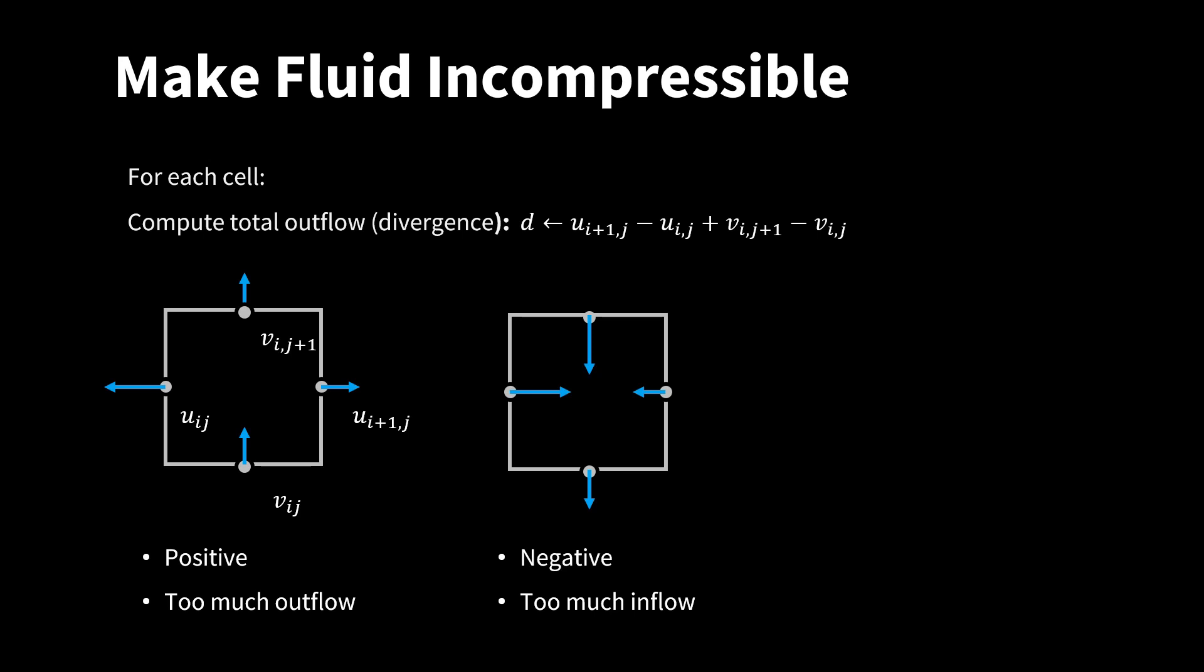In this example here, the divergence or the total outflow is negative. There is too much fluid flowing into the cell. Only if the divergence or the total outflow is zero, then the fluid is incompressible.